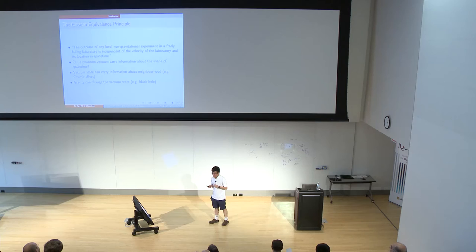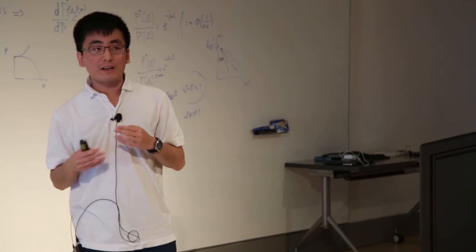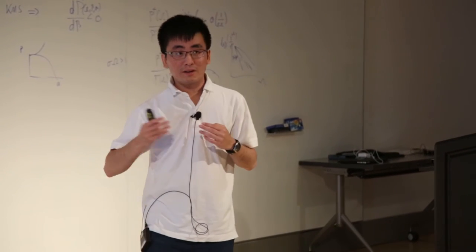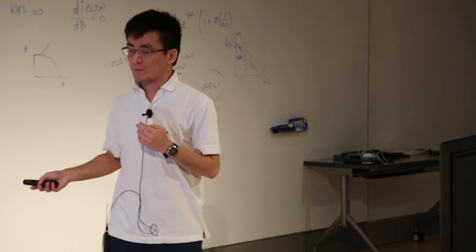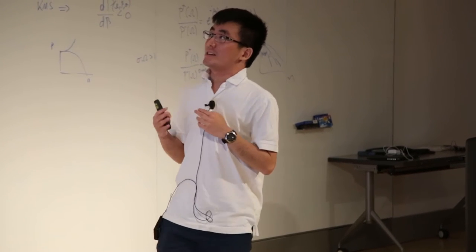Now the word local there is important. If we're allowed to interact with the state of the field in our vicinity, we have to be sure that the state of the field is the same for the statement to work. But we know that the quantum vacuum state can differ from area to area and can carry information about the neighborhood, for example the Casimir effect. We also know that gravity can change the state, for example in a black hole.